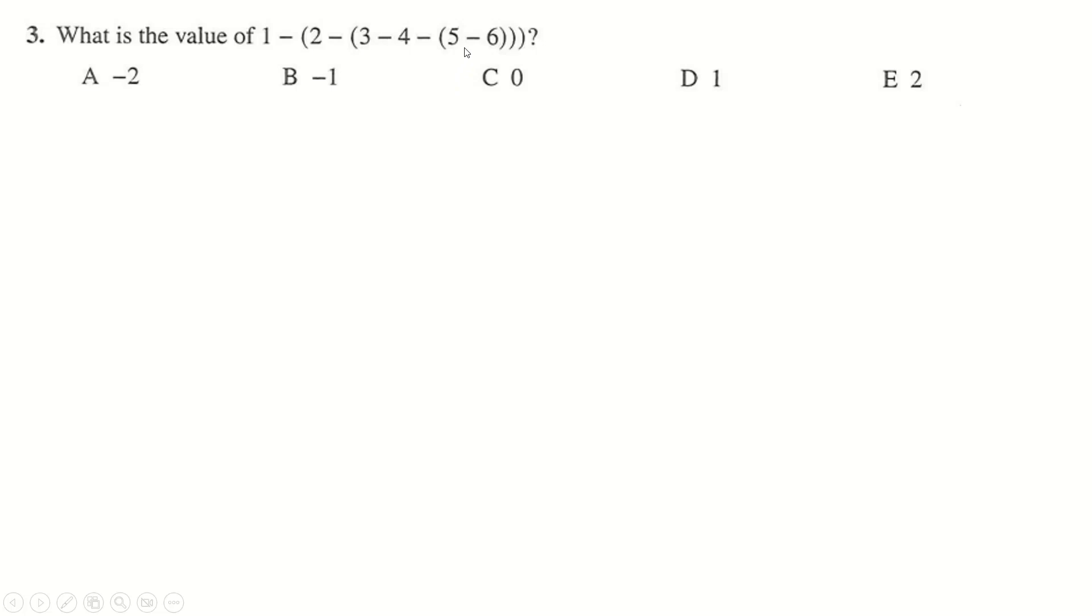Question number 3, so just do this slowly. 5 take away 6 is minus 1, so then we end up with 4 take away minus 1. Just read left to right here. 3-4 plus 1 is going to be 0, of course. Minus 1 plus 1 is 0. 2 take away 0 is just 2, and 1 take away 2 is minus 1.